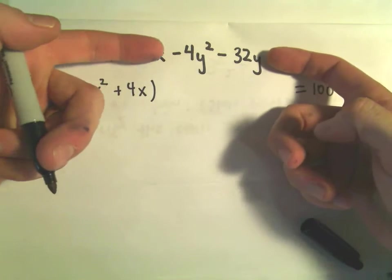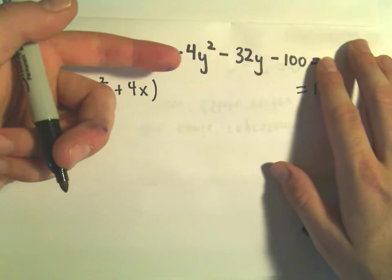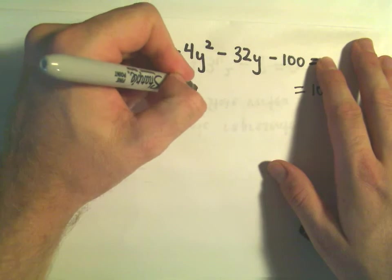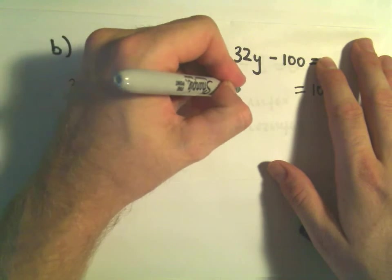Same thing on my terms involving y squared and y. I'm going to factor out the coefficient on the y squared term, which would be negative 4. So inside the parentheses, I would need y squared plus 8y.